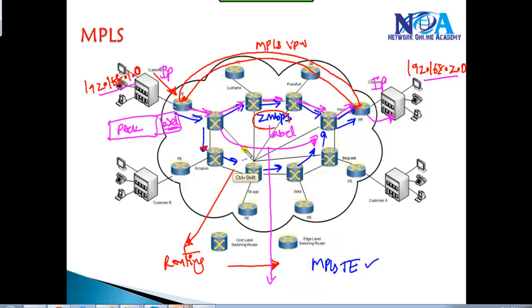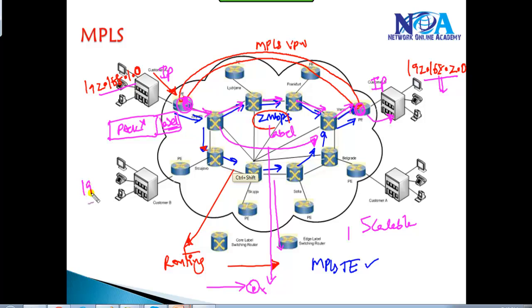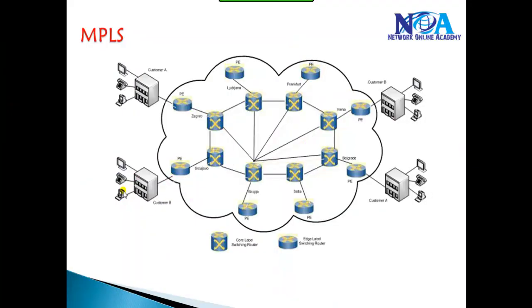So the customer sends a normal IP packet and receives a normal IP packet, but in between, packets are switched based on labels rather than forwarded based on IP addressing. One major benefit is that without knowing the actual customer routes, the service provider can still forward the packet. Normally, if a router doesn't know the destination network in its routing table it drops the packet, but here it reads the label. This also means two different customers can use overlapping IP networks - like both using 192.168.1.0 - and it won't cause problems because forwarding is based on the MPLS VPN label, not the actual IP header.